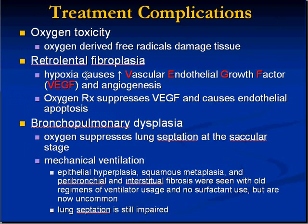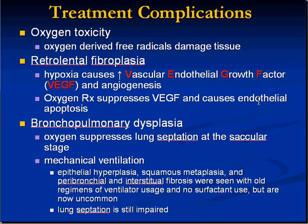Specifically with newborns, there's a condition called retrolental fibroplasia, or fibrosis behind the lens of the eye. That's due to the fact that hypoxia induces, by normal physiologic mechanisms, vascular endothelial growth factor. Vascular endothelial growth factor induces angiogenesis, and oxygen's toxicity suppresses VEGF, therefore inducing endothelial apoptosis.